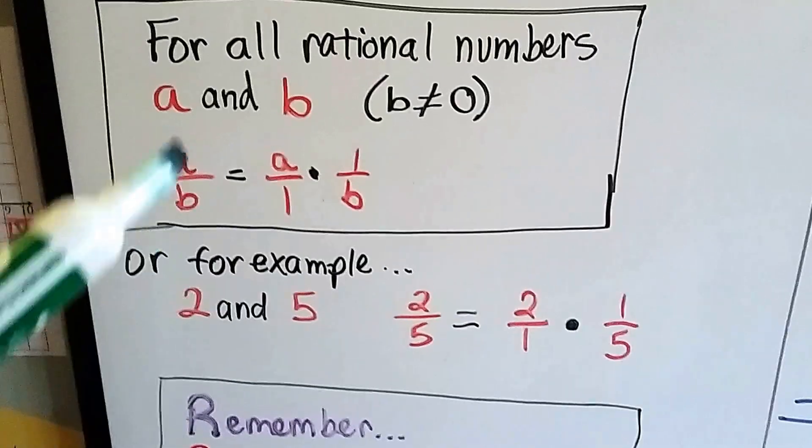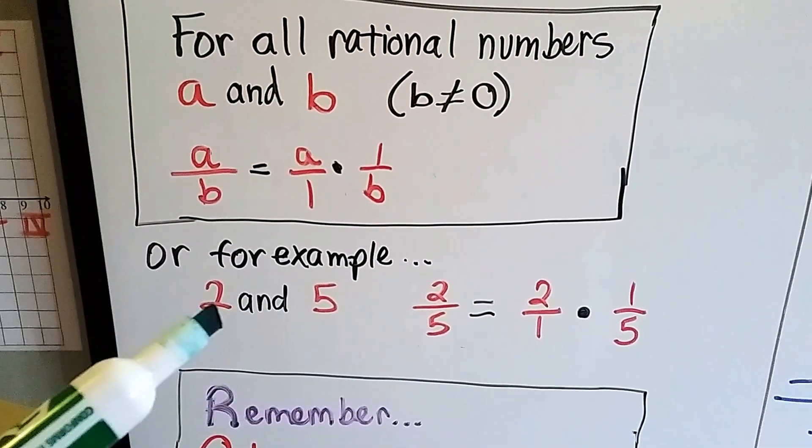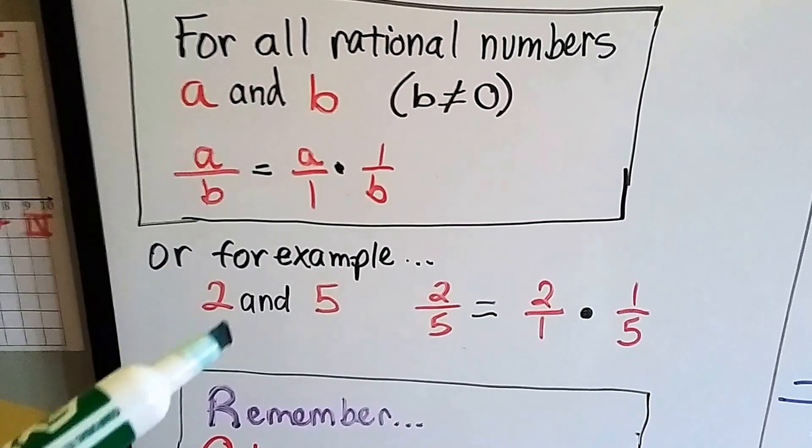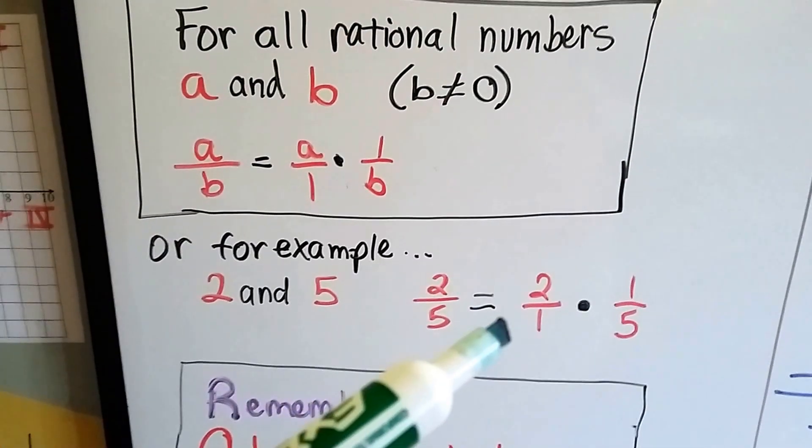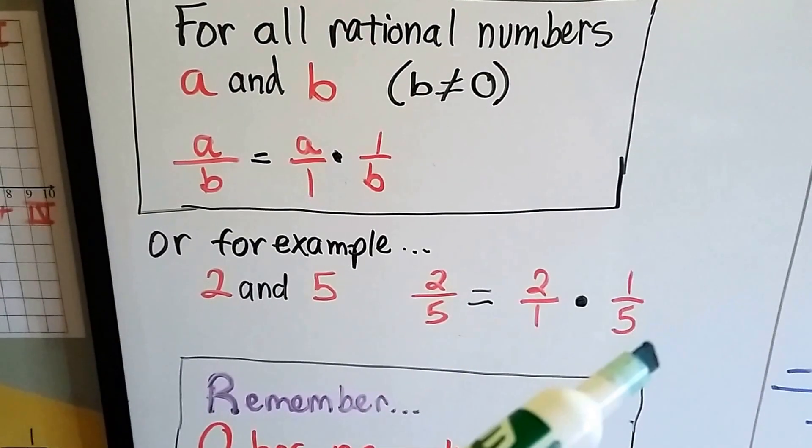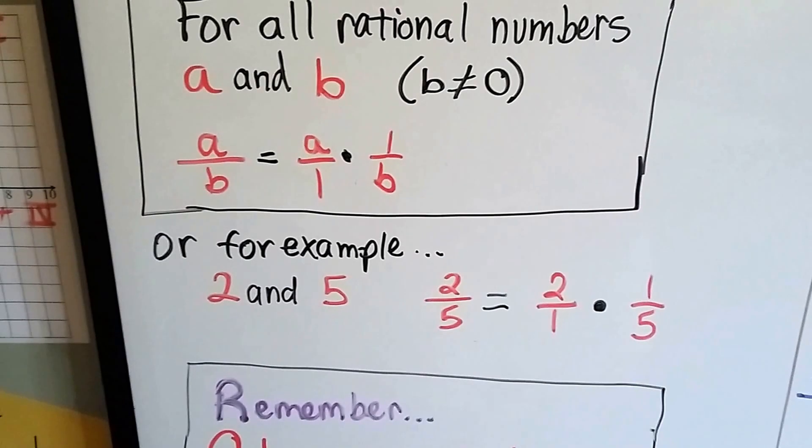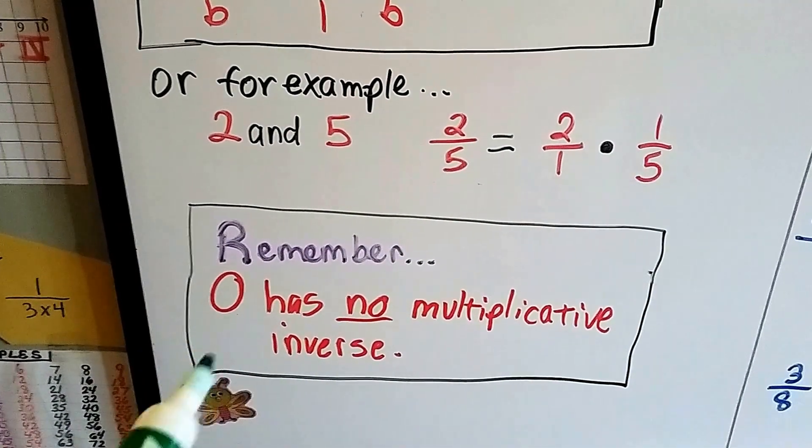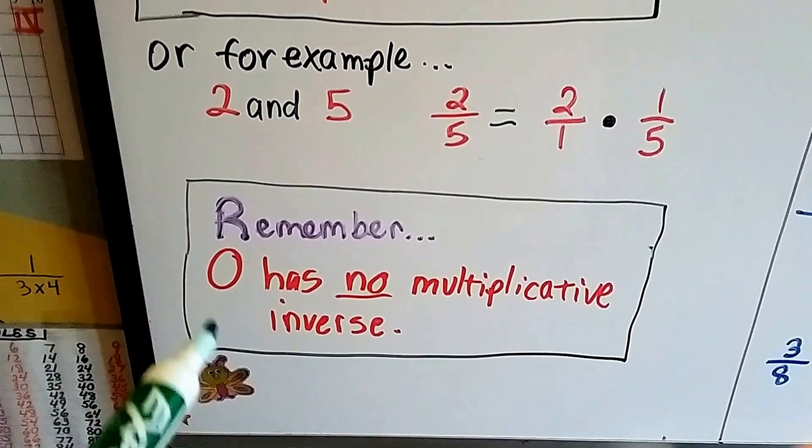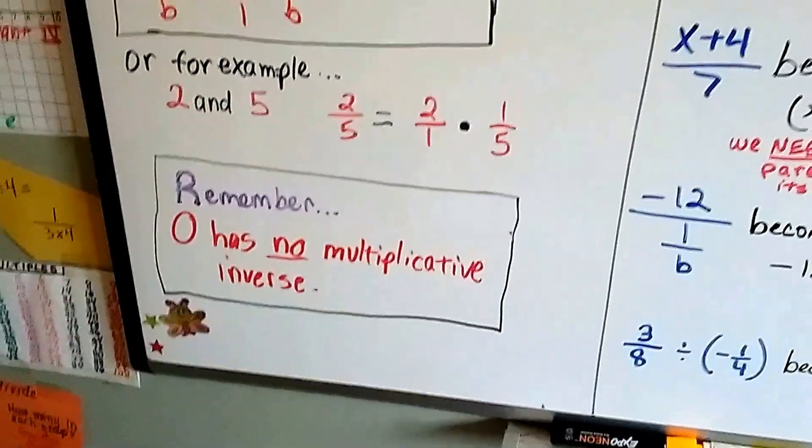Think of it this way. If a and b instead were a 2 and a 5, for the a and the b, a over b, 2 over 5, is going to equal 2 over 1 times 1 over 5. And it does, because 2 times 1 is 2 and 1 times 5 is 5. It's 2 over 5. But remember that 0 has no multiplicative inverse. It's got no reciprocal. So we can't divide by 0.